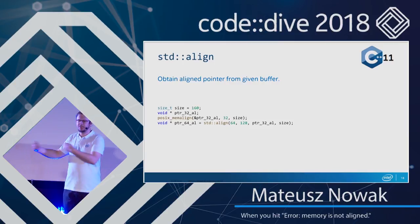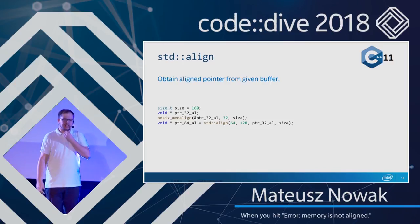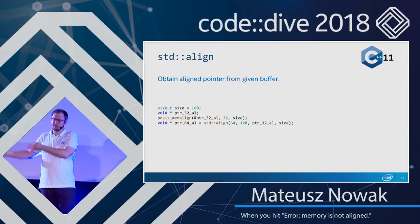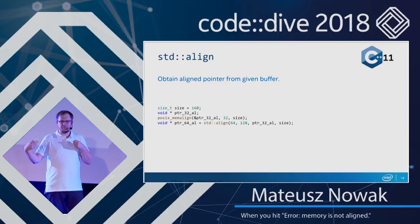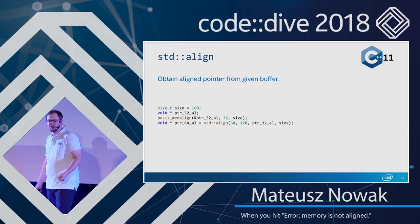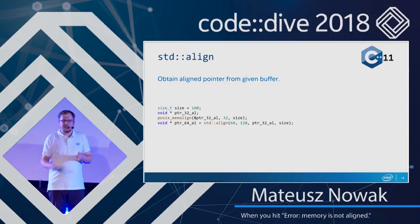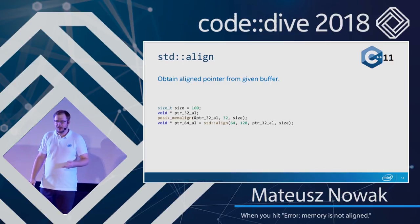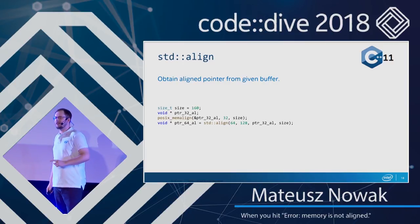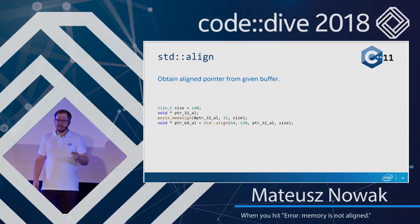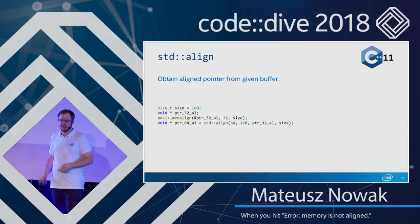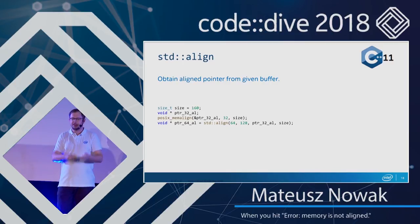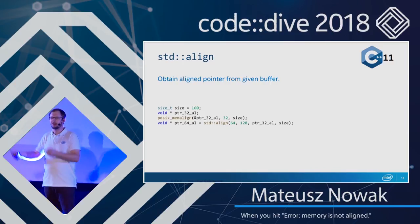The next feature available in C++11 is std::align. This allows obtaining an aligned pointer to an aligned buffer from another buffer. For example, from a buffer aligned to 32 bytes with a size of 160, we can extract a sub-buffer aligned to 64 bytes with a length of 128. Importantly, std::align will return a null pointer if the new buffer does not fit within the old buffer, so all parameters for the sub-buffer extraction must be valid for the function to succeed.